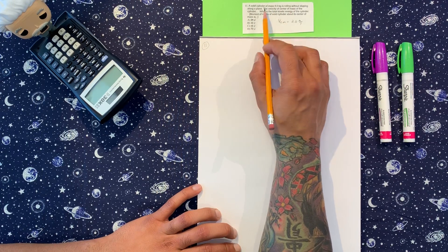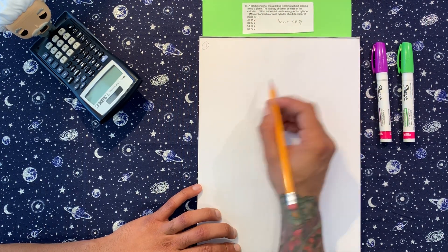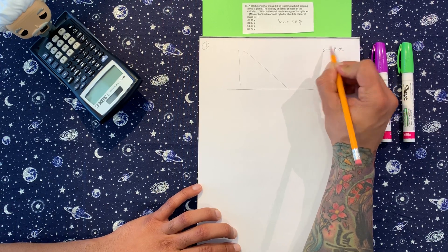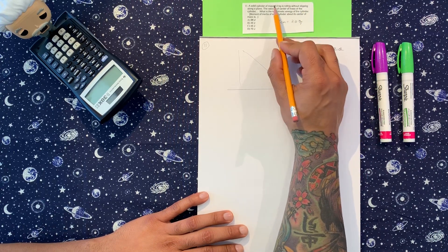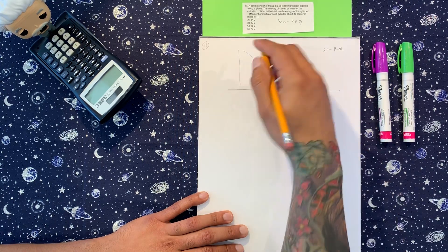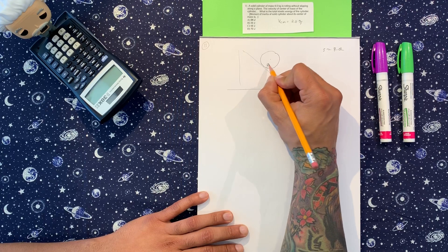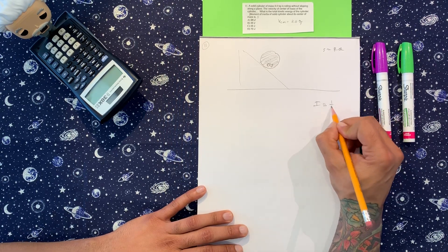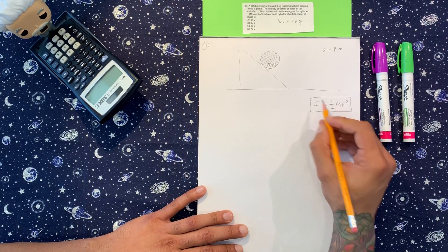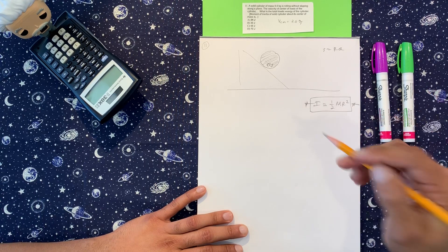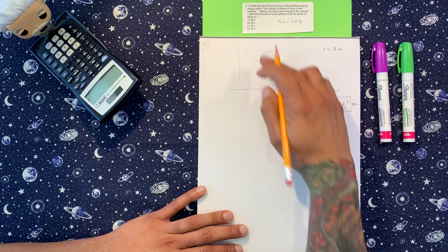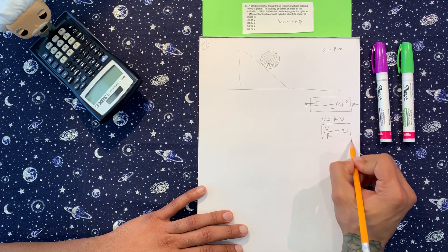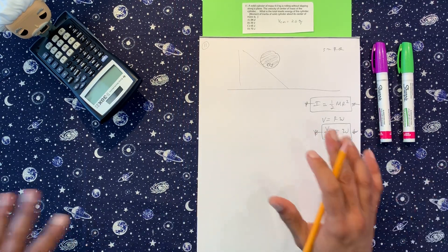So a solid cylinder of mass 8 kilograms is rolling without slipping along a plane. We have the cylinder facing inward — it just looks like a circle for us — and this is 8 kilograms, solid. That means the moment of inertia for a solid cylinder is one-half mr squared. We're also going to need the rolling constraint: v over r equals omega.